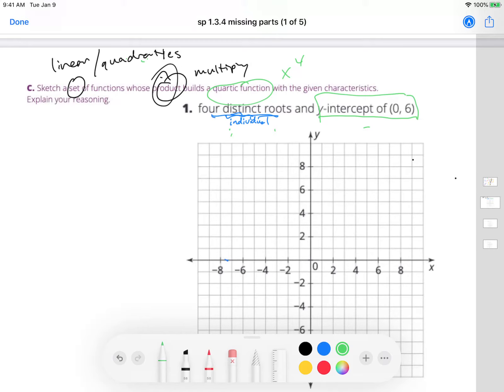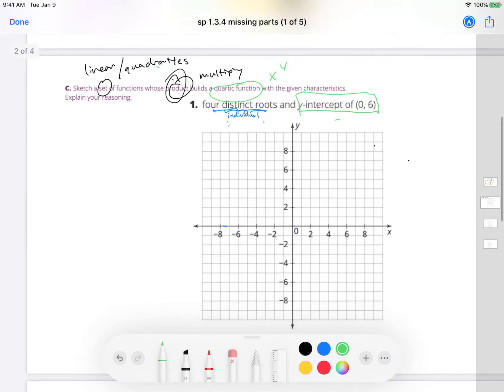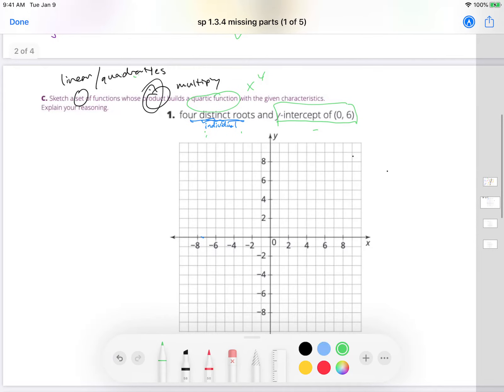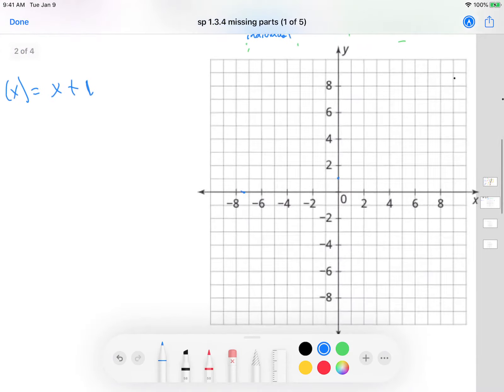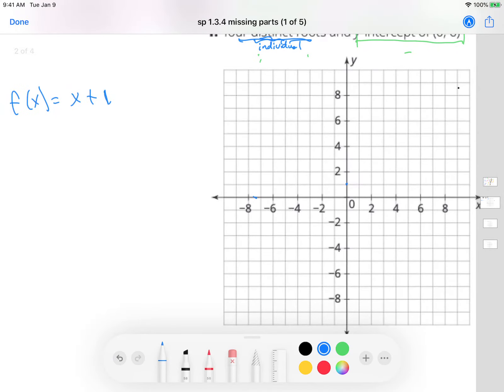Here's an example. Watch. Let's say I choose f(x) = x + 1. Let's graph that. So you have a y-intercept of 1 right there, and then you just have a slope of 1, up 1 right 1, and there's my line.